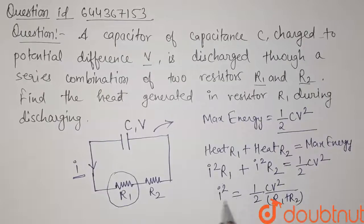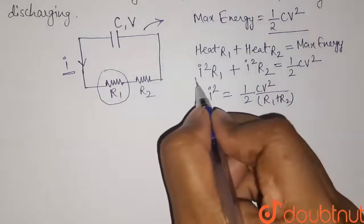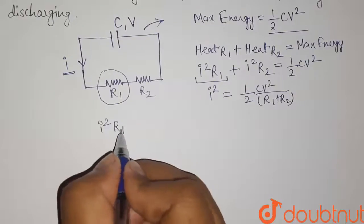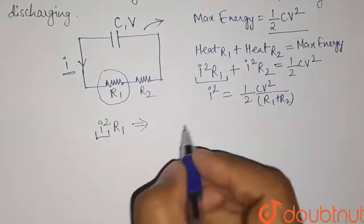So this is the value of I square. Now we know the heat generated in R1 equals I square into R1. So let us put the value of I square here.